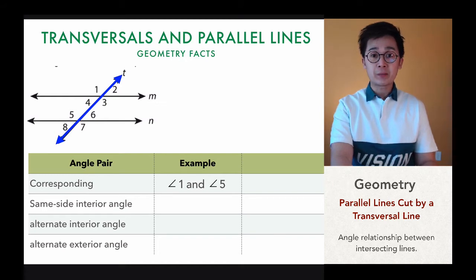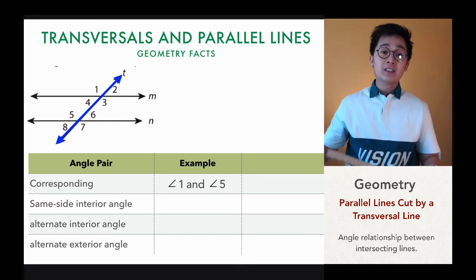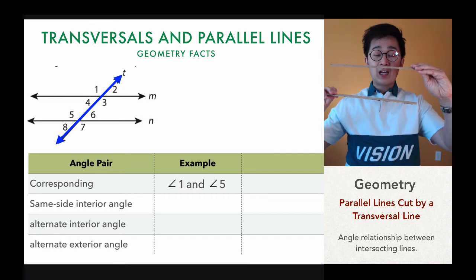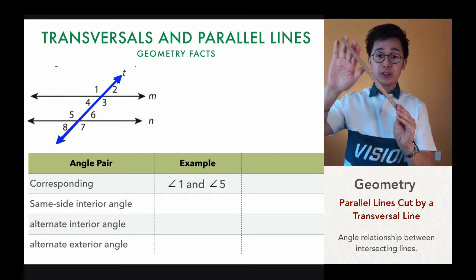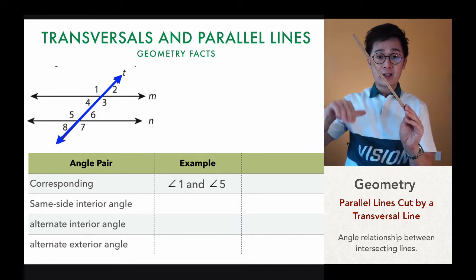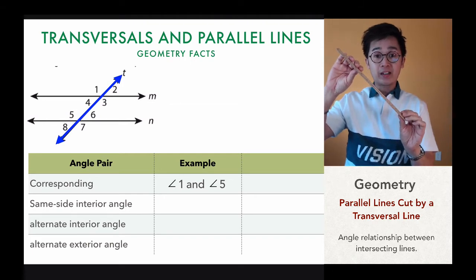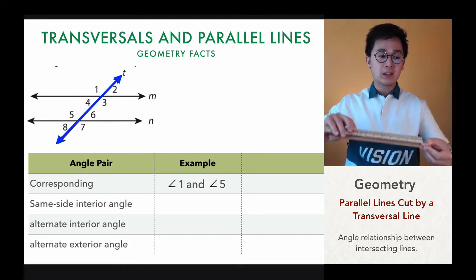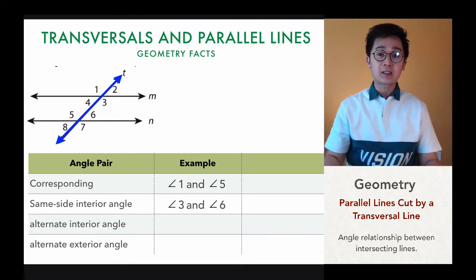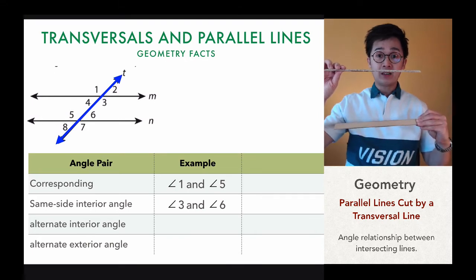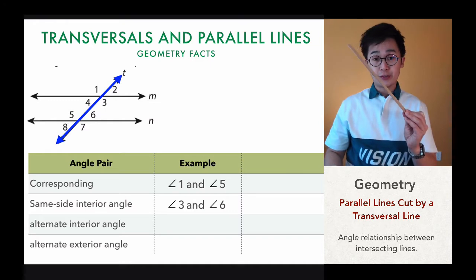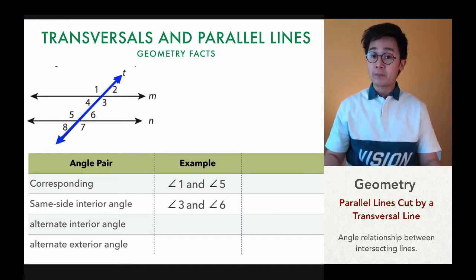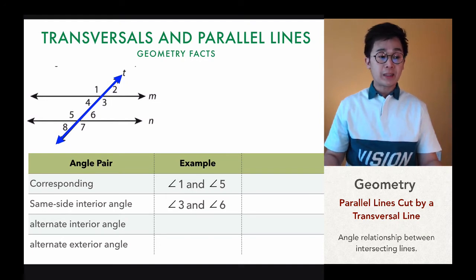The next relationship is the same side interior angle. It's called same side interior because the angles are on the same side of the transversal, and they are also in the interior or inside the parallel lines. An example would be angle three and angle six — they're both inside the parallel lines and both on the same side of the transversal. Another pair of same side interior angles would be angle four and angle five.